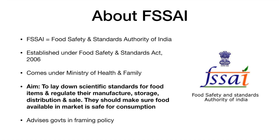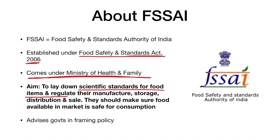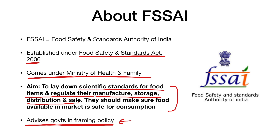FSSAI — the Food Safety and Standards Authority of India — was established under the Food Safety and Standards Act 2006, and it comes under the Ministry of Health and Family Welfare. Its main aim is to lay down scientific standards for food items and regulate their manufacture, storage, distribution, and sale, ensuring that only healthy and scientifically standard products are available in the market. FSSAI is also responsible for advising both central and state governments in framing food-related policies, such as the color coding policy.